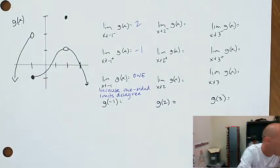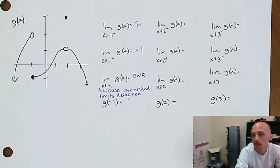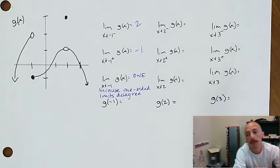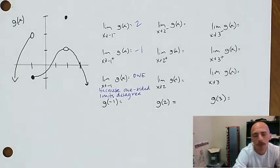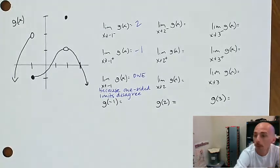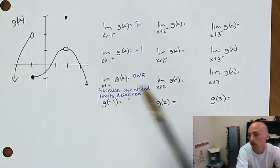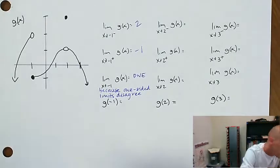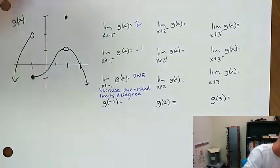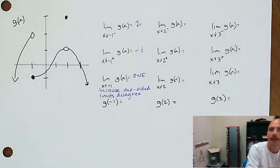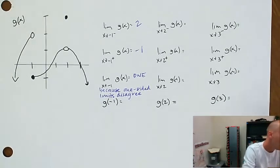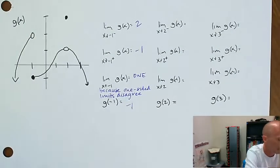On this particular homework it did not say to give a reason why the limit fails to exist, but that could be something asked on a quiz. Right now, looking at pictures of graphs, we'll see either disagreement in one-sided limits or possibly an infinite discontinuity like a vertical asymptote. g of negative 1 is where the circle's filled in — that's going to be negative 1. The limit of g need not necessarily exist in order for g to exist at a point.